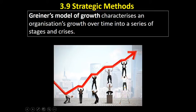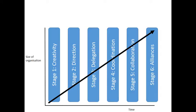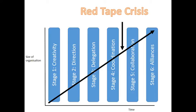Just two reminders: Greiner's growth model characterizes an organization's growth over time into a series of stages, and each stage has a crisis that leads to the end of that stage and the beginning of a new stage of growth. We looked at the first three stages of growth in the first video, along with their crises.